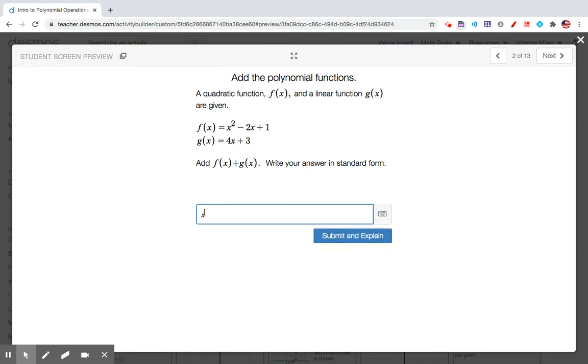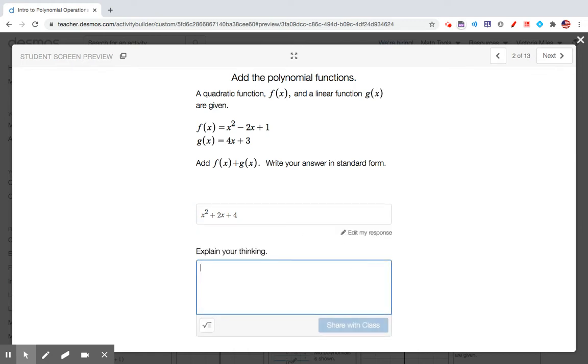So x squared is the only quadratic term. There are two linear terms and two constant terms. You'll explain your thinking of where that came from and why it is correct, and then share it with the class.